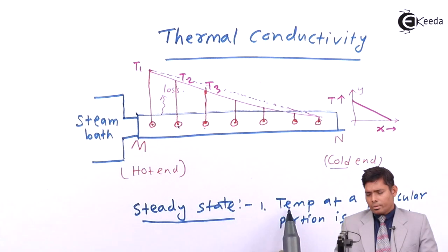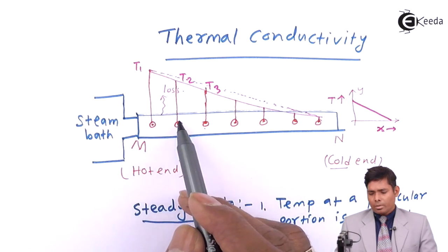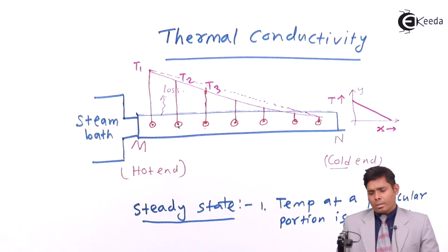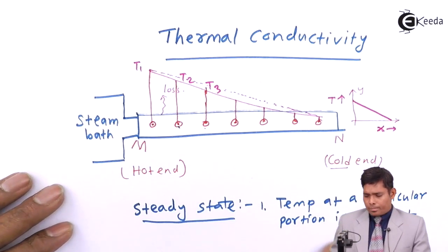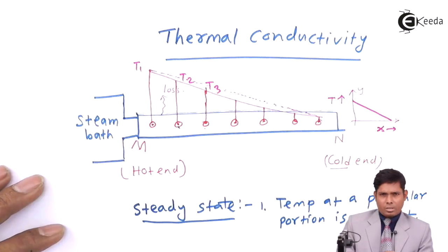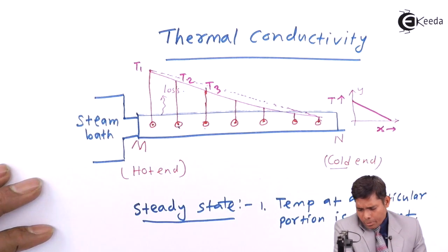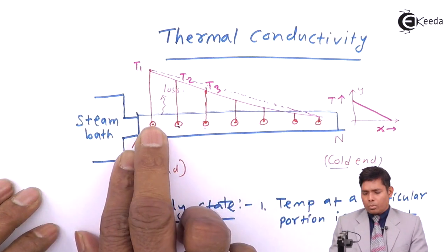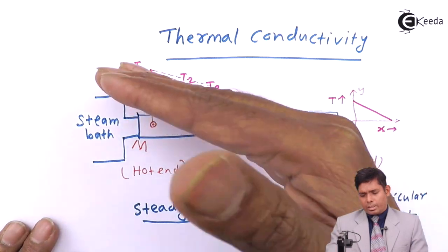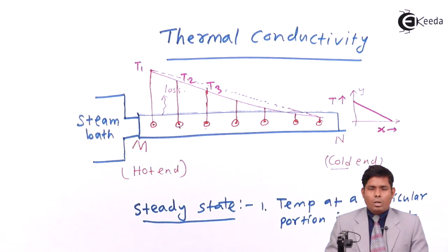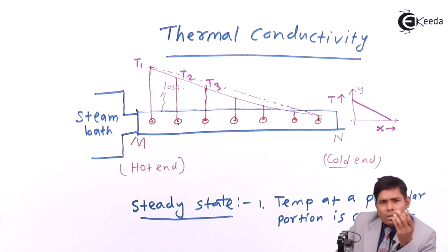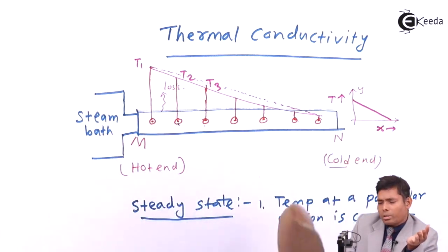During steady state, the temperature at a particular portion is constant — it remains the same. Different portions have different temperatures, but each portion has its own fixed temperature. Additionally, heat is transferred from one part of the rod to another, and there is a constant fall of temperature along the length of the rod during steady state.